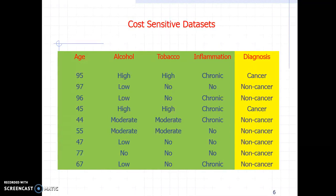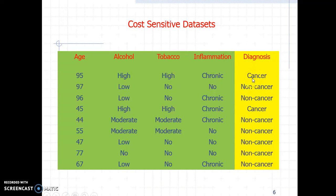The data set I just showed was cost insensitive — that means making a mistake in classifying whether the team wins or loses has more or less the same consequences. But here is an example of a cost sensitive data set: a patient database where every record represents a patient with variables like age, alcohol, tobacco, etc., and the diagnosis is cancer or non-cancer. This is a cost sensitive data set because if you mistakenly predict a cancer patient as non-cancer, the consequences can be huge, whereas mistakenly labeling a non-cancer patient as cancerous just means the patient goes through some tests to clarify.